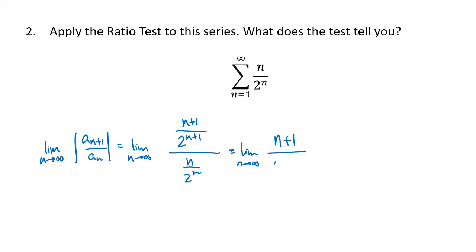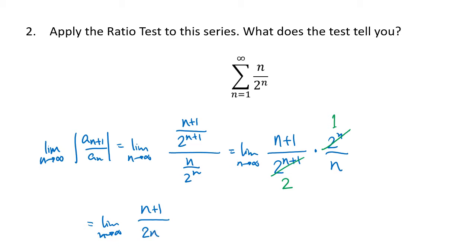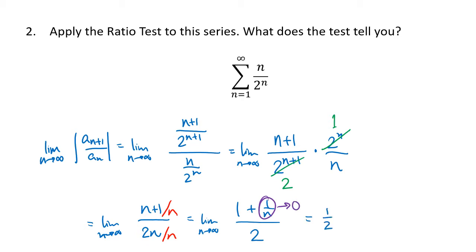We flip over the bottom fraction and multiply, getting (n+1) over 2 to the (n+1) multiplied by 2 to the n over n. The factors of 2 divide out, leaving one extra factor of 2 on the bottom. We can't cancel (n+1) and n, so we end up with the limit as n goes to infinity of (n+1) divided by 2n. Dividing top and bottom by n gives 1 plus 1/n on top and 2 on the bottom, and since 1/n goes to 0, this limit is 1/2. Since that's less than 1, this series absolutely converges.